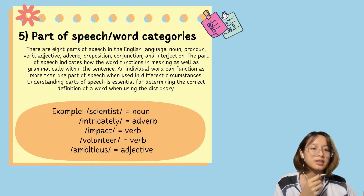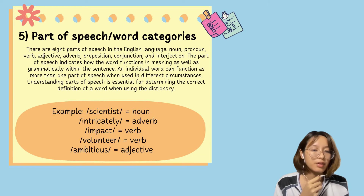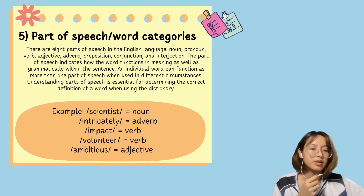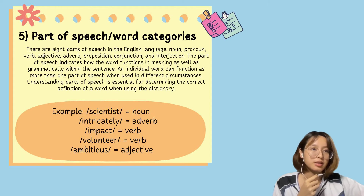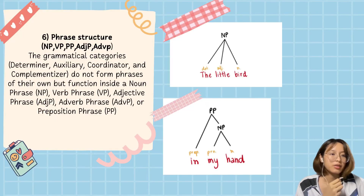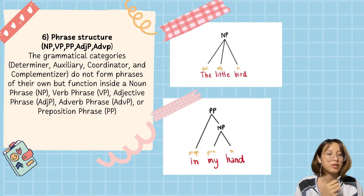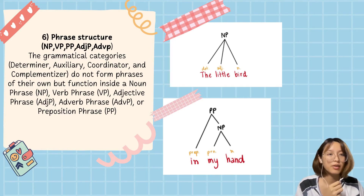For example: scientist is a noun, intricately is an adverb, impact is a noun, volunteer is a verb, ambitious is an adjective. In phrase structure, the grammatical categories form phrases — the noun phrase, verb phrase, adjective phrase, adverb phrase, and preposition phrase.